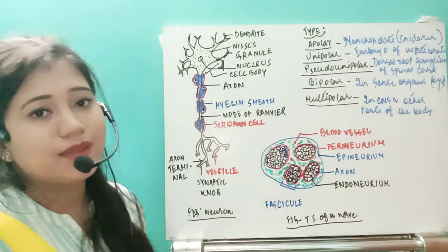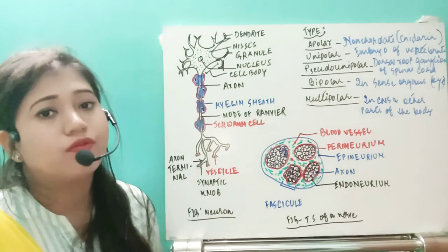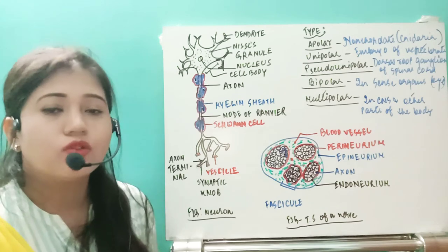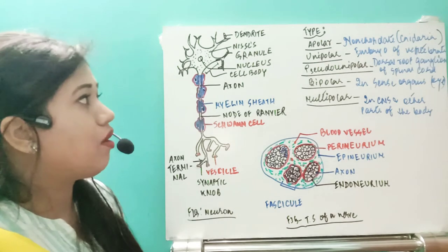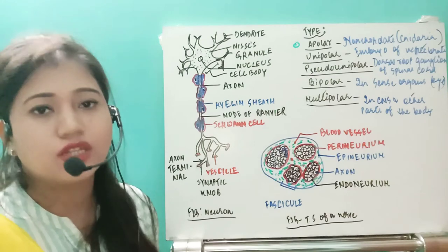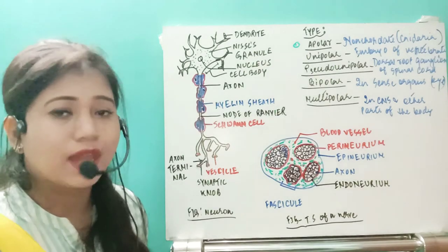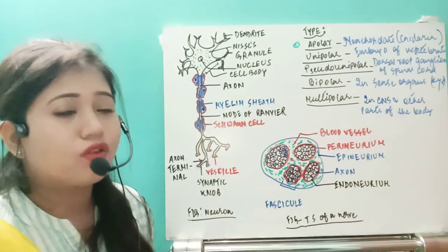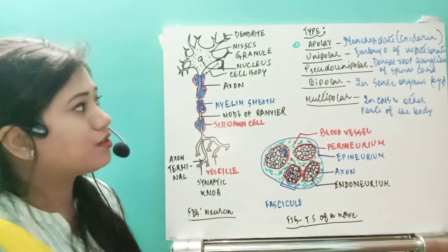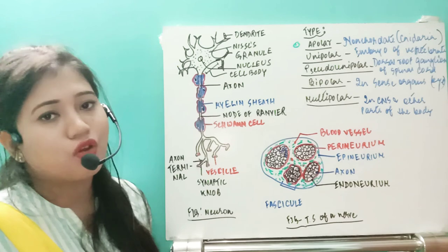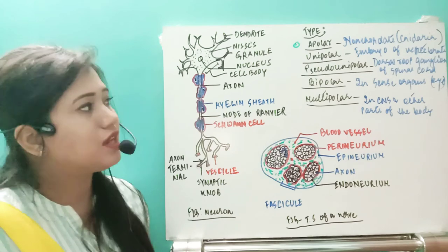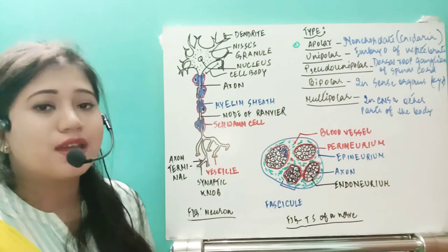Now let's move to the types of neurons. There are five types of neurons depending on the fibers projecting out of the cell body or cytone. First is the apolar type of neuron, which has no projection — only the cytone or perikaryon, with no axons or dendrites coming out. This apolar type of neuron is present in non-chordates like cnidarians, where neurons first appeared.